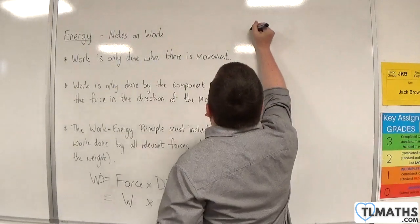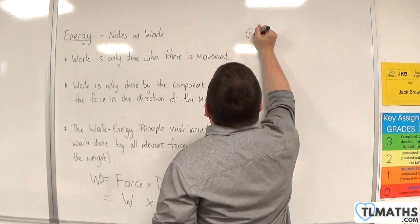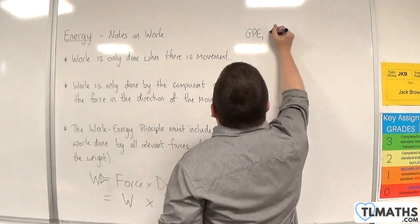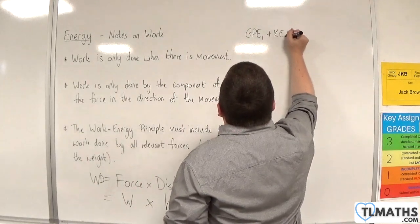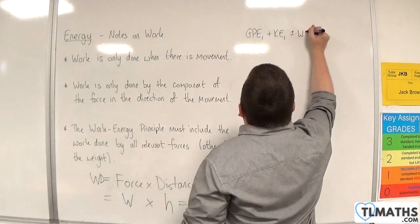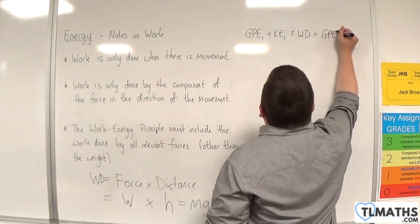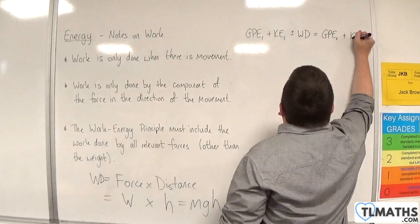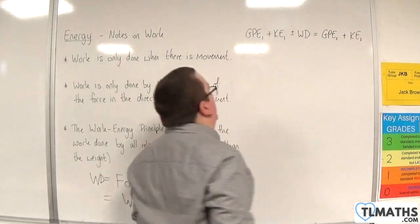The work energy principle says that the initial gravitational potential energy plus the initial kinetic energy plus or minus any work done is equal to the final gravitational potential energy plus the final kinetic energy.